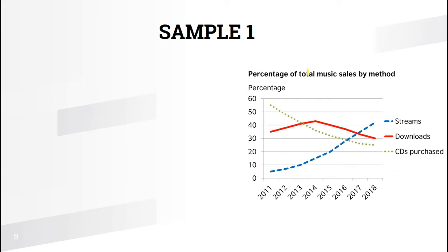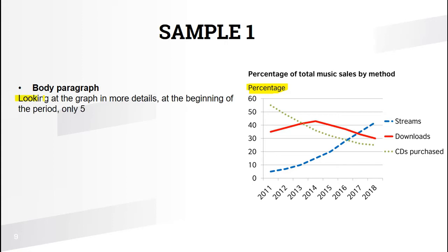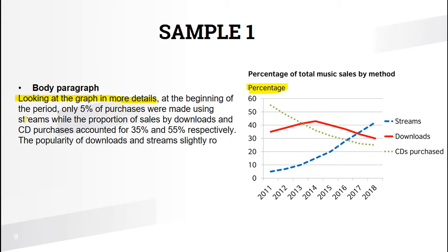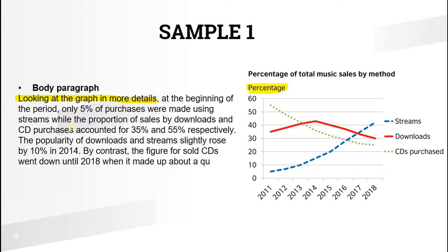Let's look at a sample body paragraph. This graph shows the percentage of total music sales by method — measured in percentages and different methods of how music was sold. I usually start my body paragraphs like this: 'Looking at the graph in more detail, at the beginning of the period, only 5% of purchases were made using streams.'